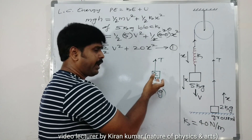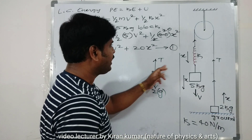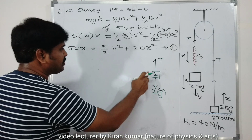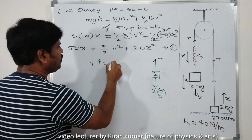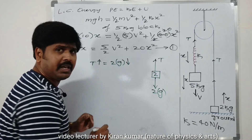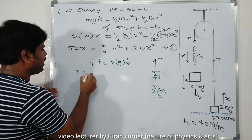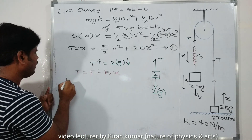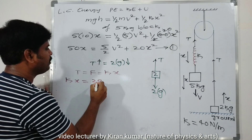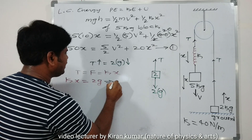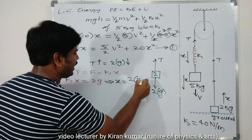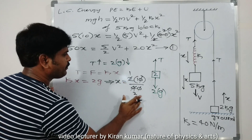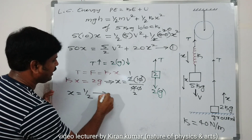When contact is removed, for the 2 kg block: tension acts upward, 2g acts downward. At the moment of leaving contact, T = kx = 2g. Therefore: kx = 2 × g, so x = (2 × 10) / 40 = 20/40 = 1/2. So x = 0.5 m. This is Equation 2.